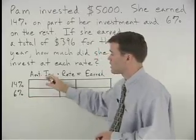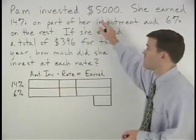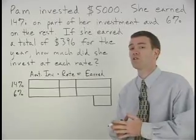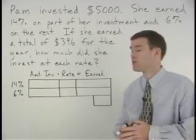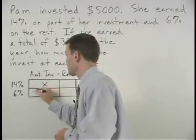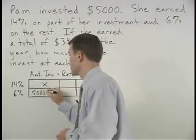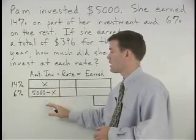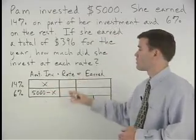For the amount invested column, we know that Pam invested $5,000, but we don't know how much she invested at each rate. So we use x and 5,000 minus x to represent the amount she invested at each rate.